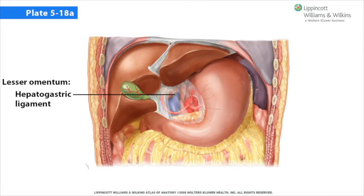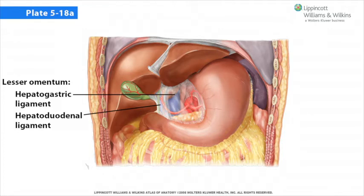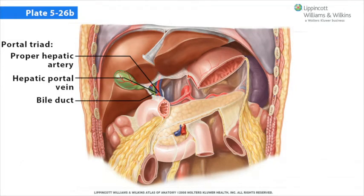The portion between the gallbladder and the ligamentum teres, anterior to the porta hepatis, is the quadrate lobe. The part of the lesser omentum between the liver and the stomach is called the hepatogastric ligament, while the part between the liver and the duodenum is called the hepatoduodenal ligament. Running in the hepatoduodenal ligament — the free edge of the lesser omentum that forms the superior part of the omental foramen — are three structures that compose the portal triad: the common bile duct to the right of the hepatic artery proper, and the portal vein inferior to those two structures. These structures enter the liver at the porta hepatis.